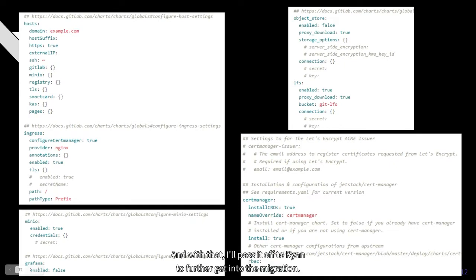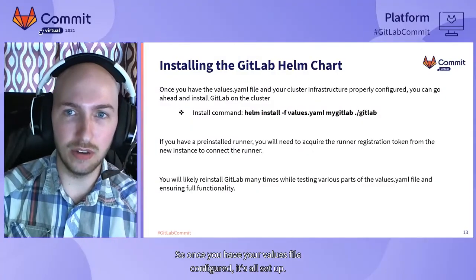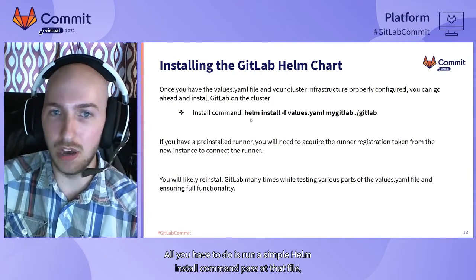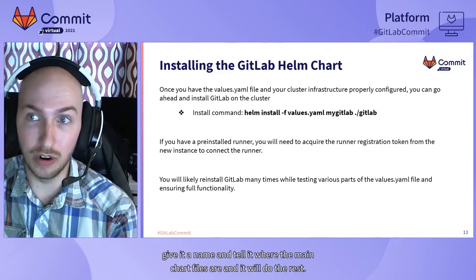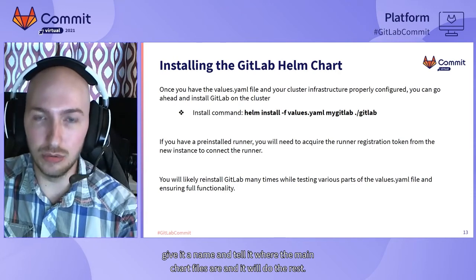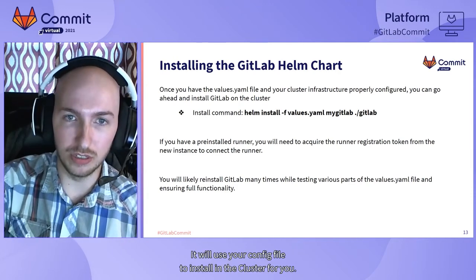I'll pass it off to Ryan to further get into the migration. So let's talk about actually getting this installed in Kubernetes. Muhammad walked you through the Helm chart — how you can configure different parts and tweak different aspects to get the version of GitLab that works for you. Once you have your values file configured, all you have to do is run a simple Helm install command, pass it that file, give it a name, tell it where the main chart files are, and it will do the rest. It will use your kubeconfig file to install it in the cluster for you.